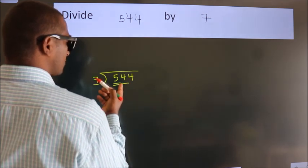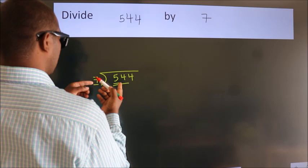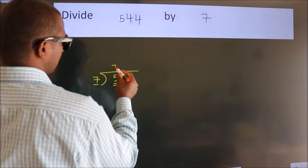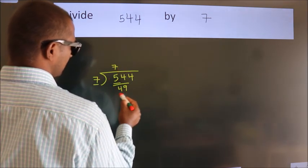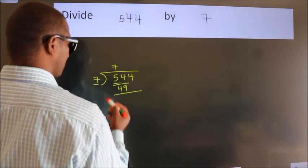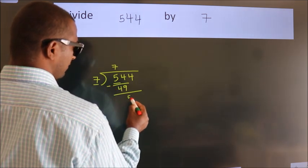A number close to 54 in the 7 table is 7 sevens, 49. Now we should subtract, we get 5.